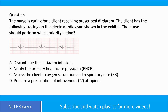The nurse is caring for a client receiving prescribed diltiazem. The client has the following tracing on the electrocardiogram shown in the exhibit. The nurse should perform which priority action? A. Discontinue the diltiazem infusion. B. Notify the primary healthcare physician. C. Assess the client's oxygen saturation and respiratory rate. D. Prepare a prescription of intravenous (IV) atropine.